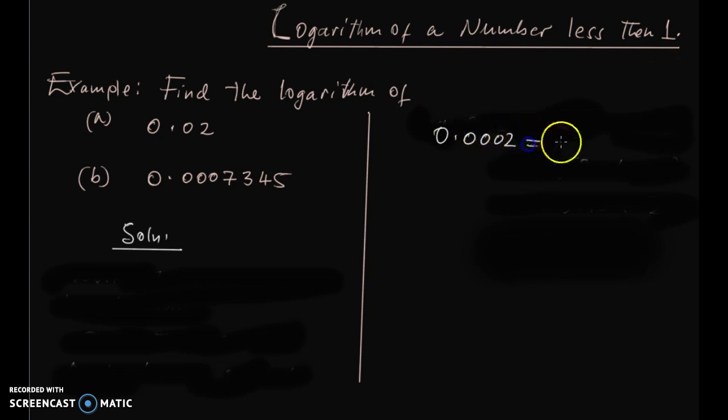So this is the same as 2 times 10 power negative 4. When we express in logarithm, negative exponents are represented by bars.